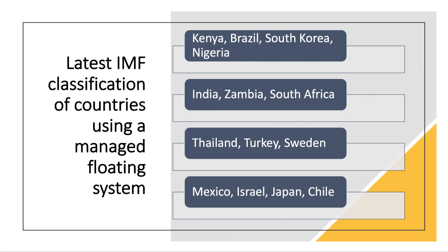The choice of exchange rate regime is one of the most important a country can make when shaping macroeconomic policy. A managed floating system is the most popular exchange rate system in the world economy at the moment. Examples of countries using a managed system include Nigeria, Brazil, India, South Africa, Mexico, and Japan. This makes intervention an increasingly important part of monetary and macroeconomic policy.